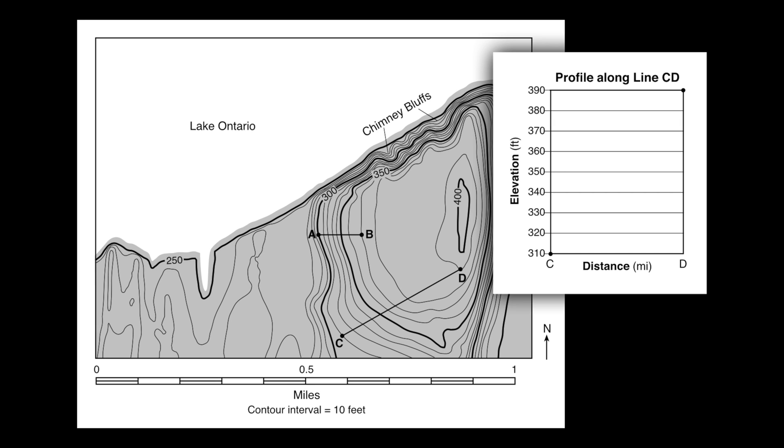On the bottom it has horizontal distances, so my locations from C to D, and then on the vertical axis I have elevations here shown from 310 to 390. This is where we're going to construct our profile view.